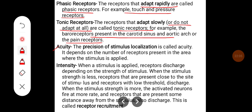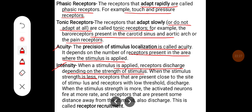Another property is acuity — the precision of stimulus localization, which depends on the number of receptors present in the area where the stimulus is applied. Regarding intensity: when a stimulus is applied, receptors discharge depending on the strength of the stimulus. When stimulus strength is low, only receptors close to the site and receptors with low threshold discharge. When stimulus strength is greater, the activated neurons fire at a higher rate and receptors some distance away from the stimulus also discharge — this is called receptor recruitment.